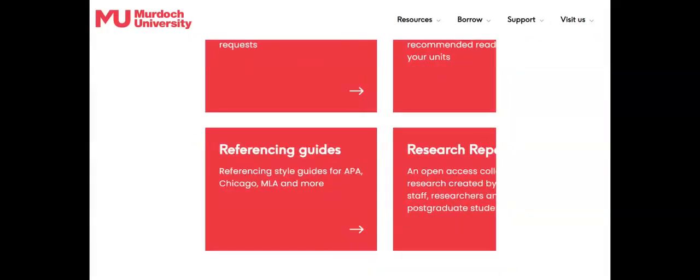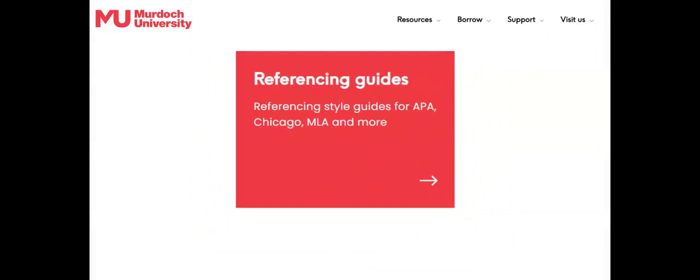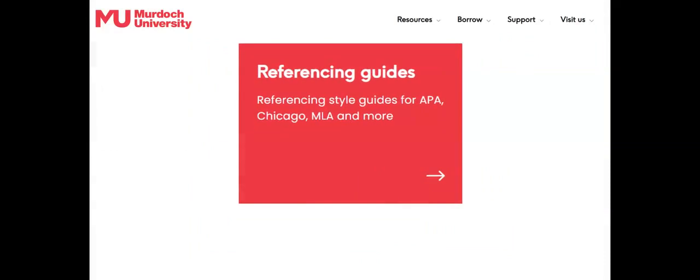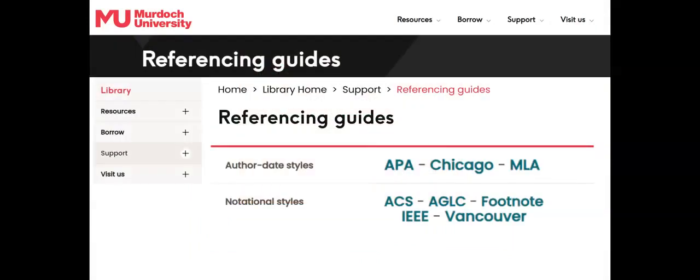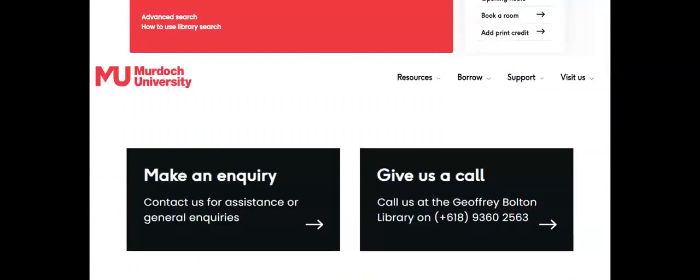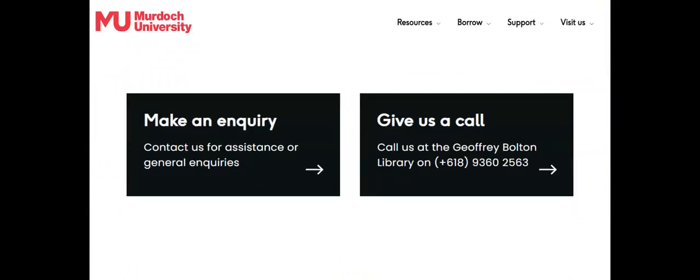The referencing guides page has links to guides for all referencing styles used at Murdoch University. Unit guides specify which referencing style you should be following for your assignments. At the bottom of the library homepage is the library's contact information. Complete an inquiry form to request help with searching or referencing.